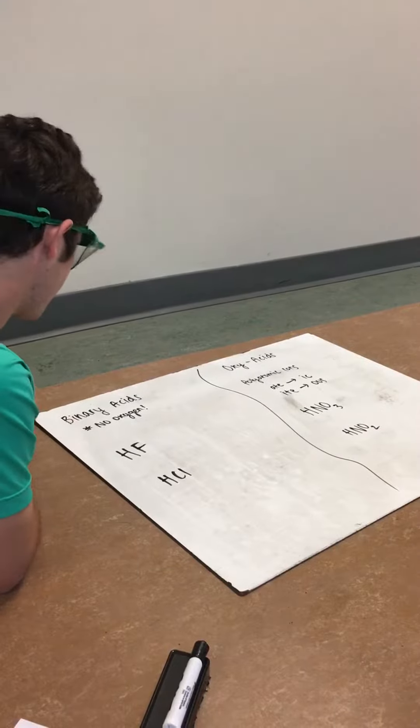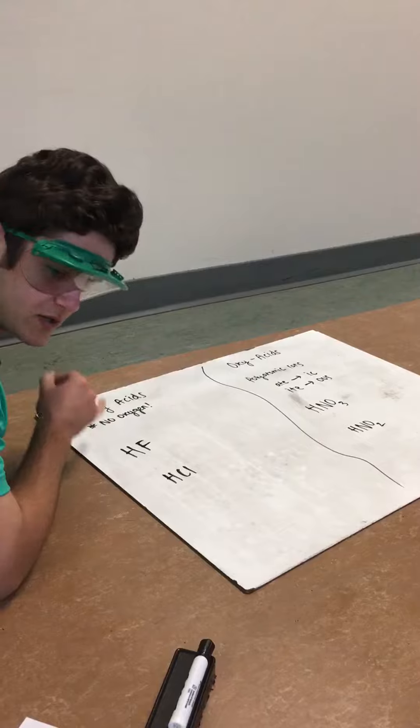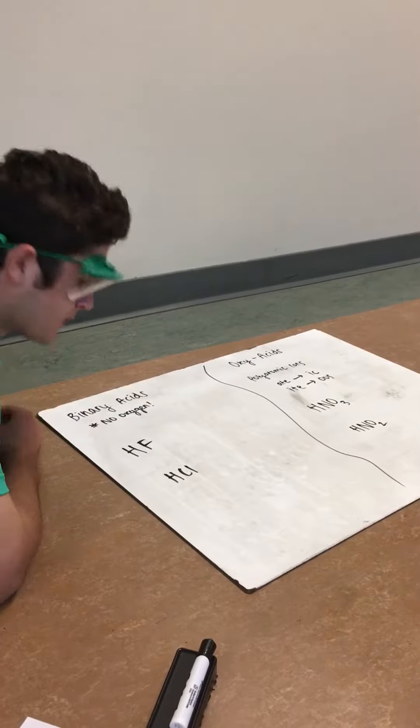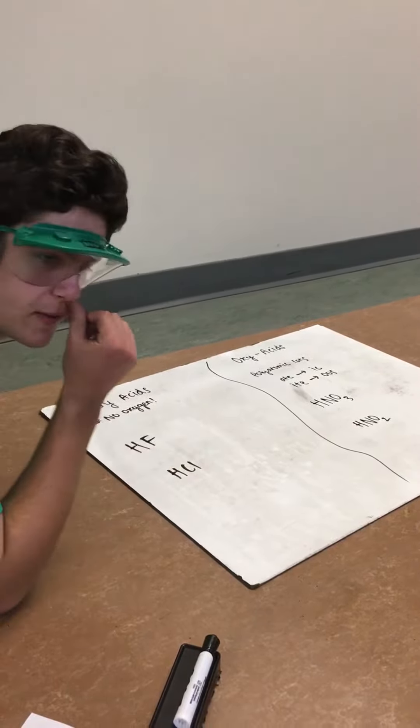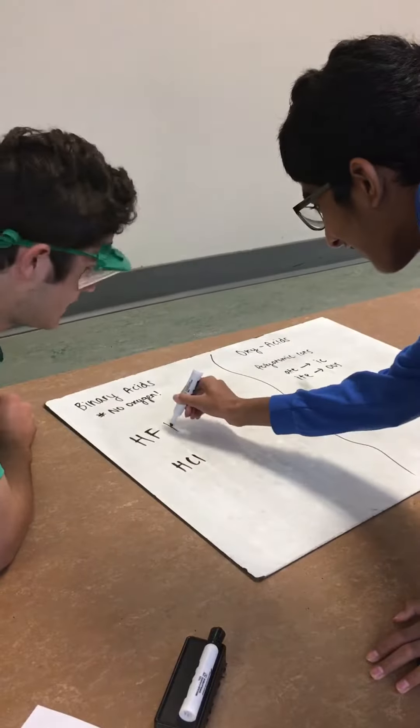So our first set of acids are binary acids. And one very important thing about these is that there is no oxygen whatsoever in these compounds. So what we have here, HF, that would be hydrofluoric acid, because these elements would always end in IC.